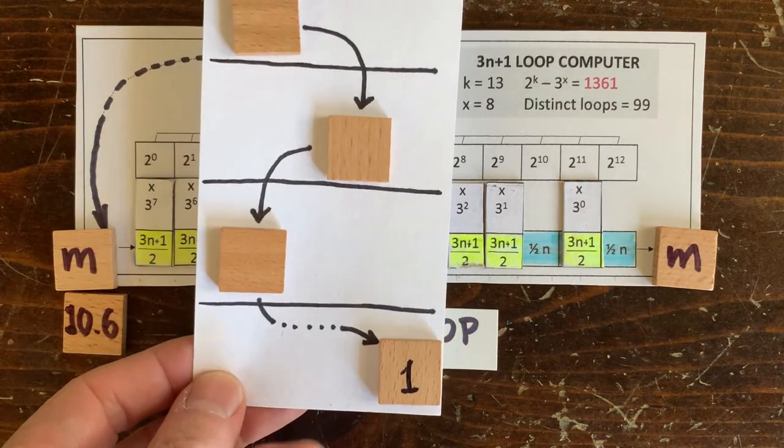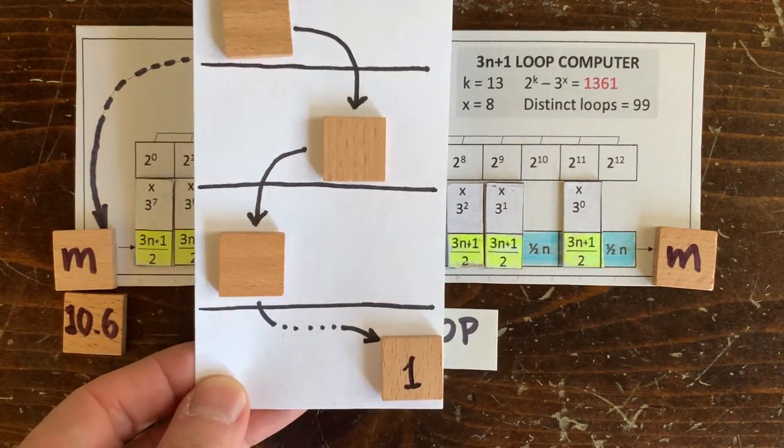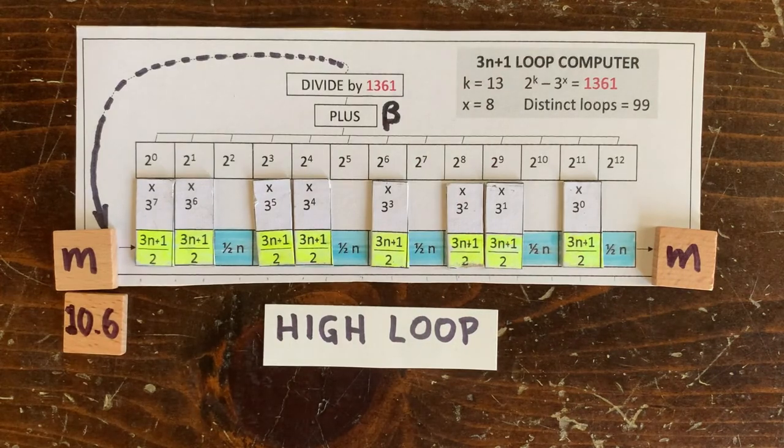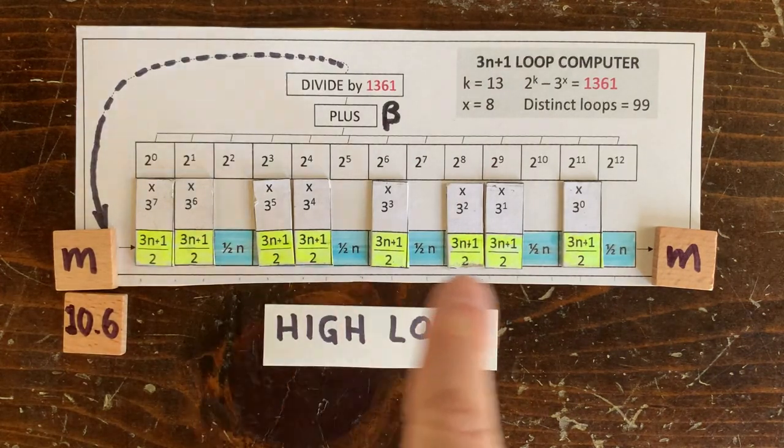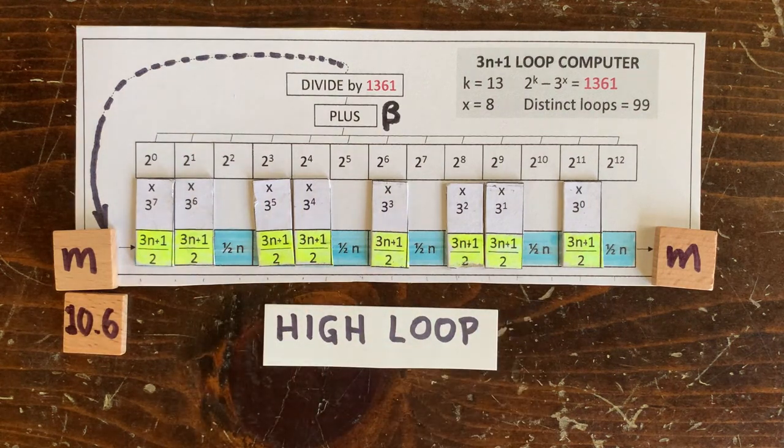Heck, if you've got a member less than a billion billion, you're not an integer loop. Anyway, for any k, we can now quickly determine whether there's even a possibility of an integer loop.